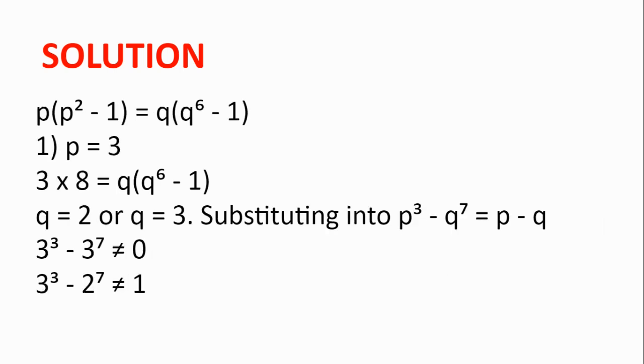So first we'll look at when p = 3. Then the left hand side is equal to 3 × 8. And either q is 2 or q is 3 because the prime factors of the left hand side are 2 and 3.